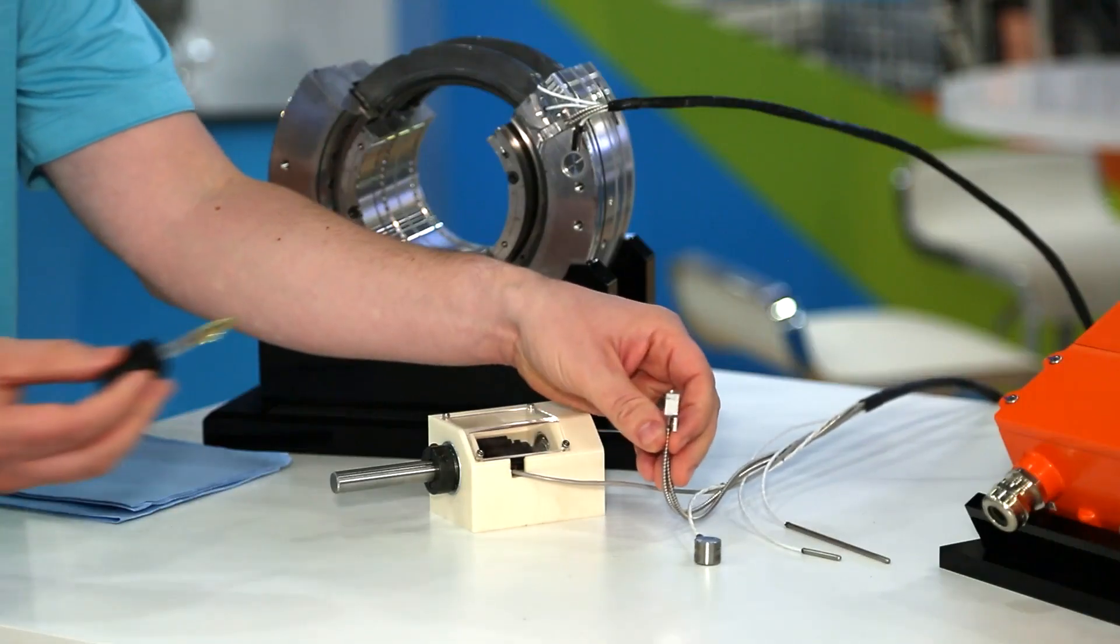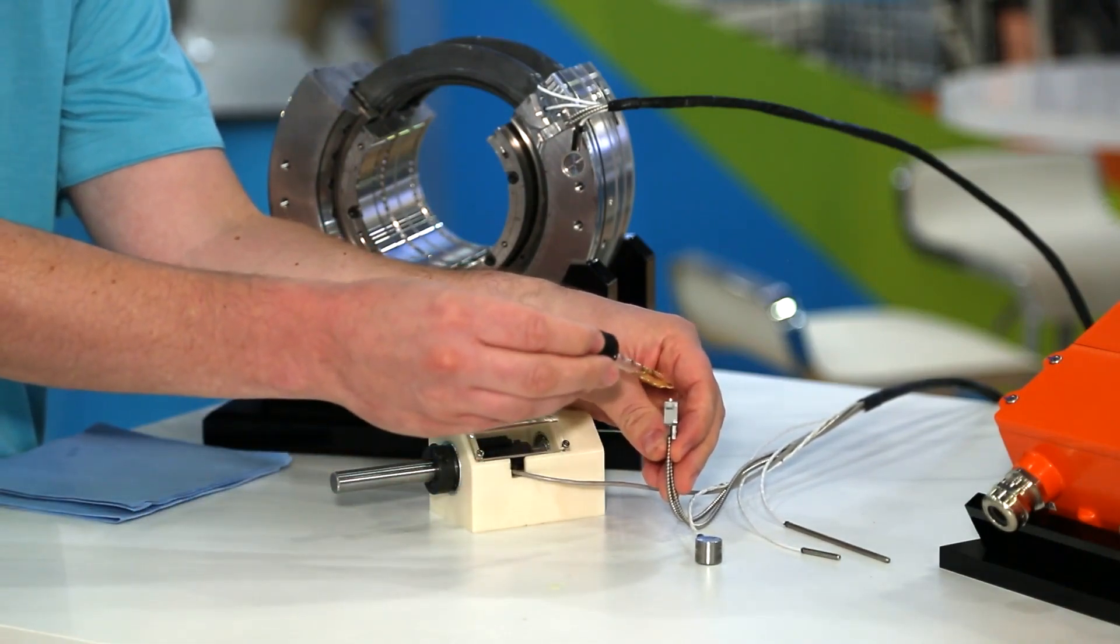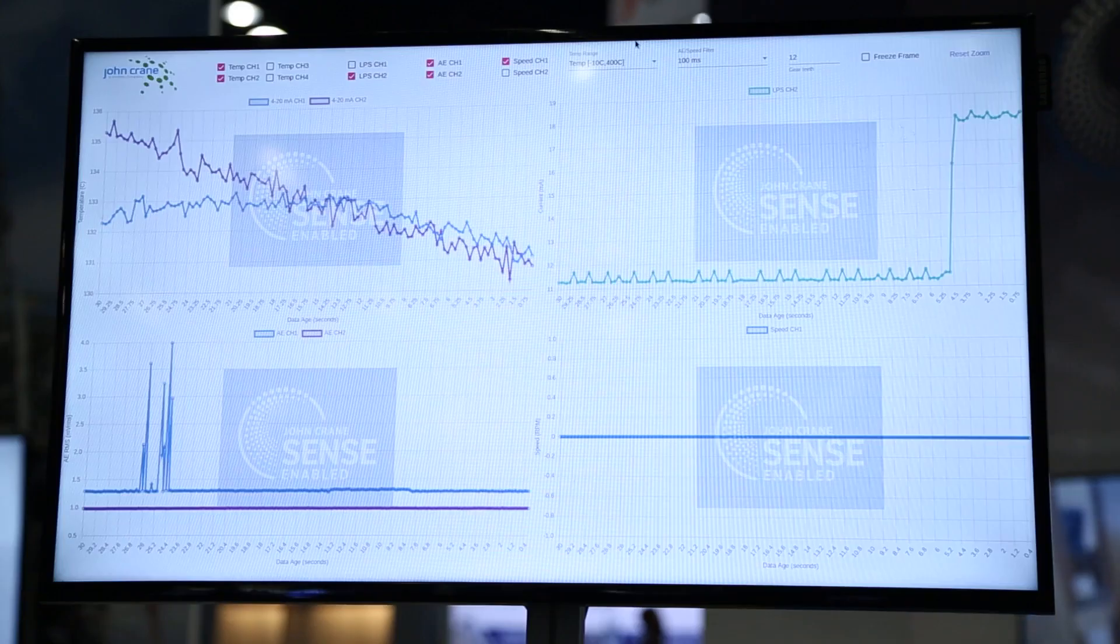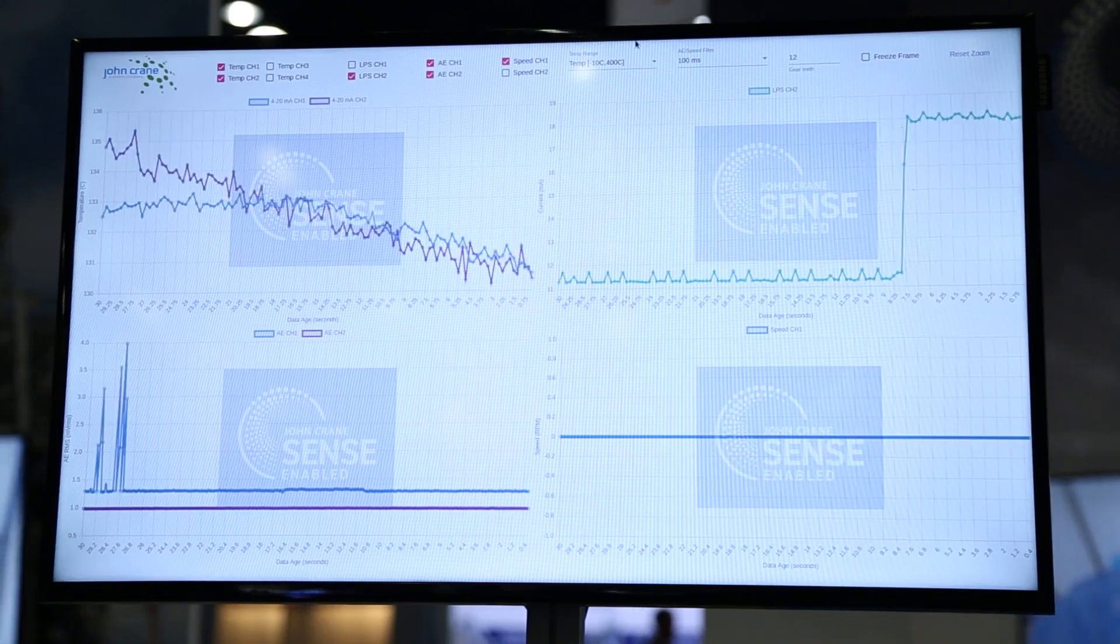Now I'll demonstrate the liquid presence sensor just by dropping a couple of drops of oil on the sensor there. Again you can see the value in the top right graph.